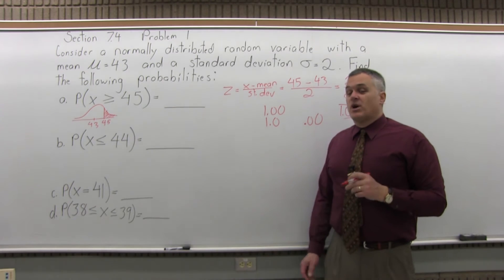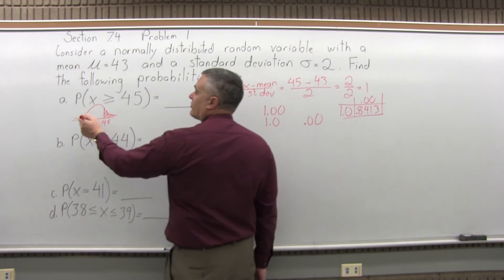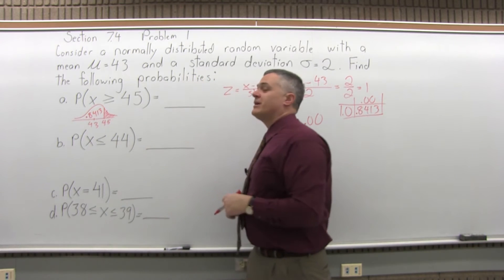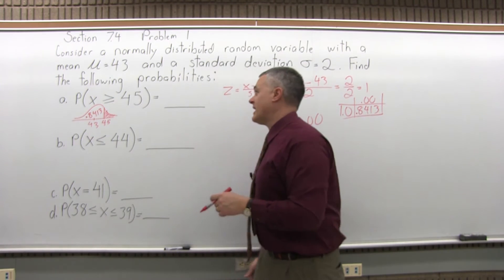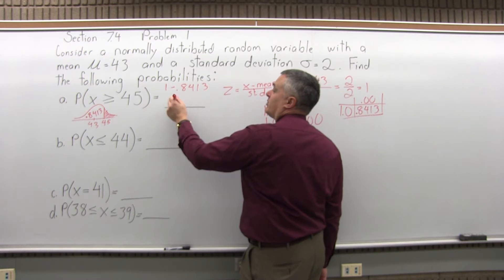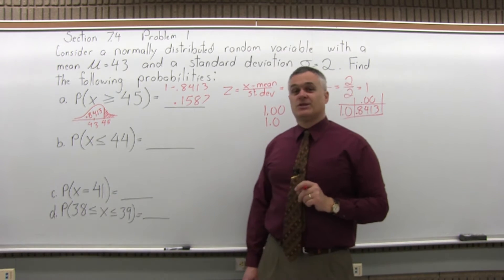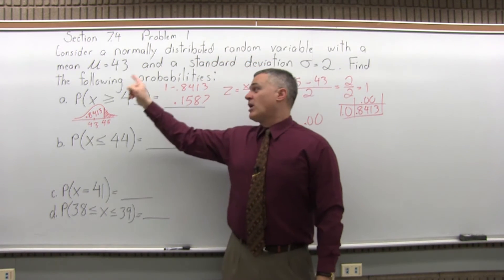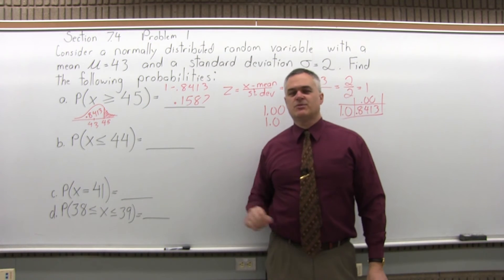The chart gives the probability of being less than the looked-up value, so 0.8413 is not the part we want. Since the question asks for greater than, we do 1 minus 0.8413, which gives 0.1587. That's the answer to Part A. For this distribution with mean 43 and standard deviation 2, the probability of getting a result greater than or equal to 45 is slightly less than 16%.